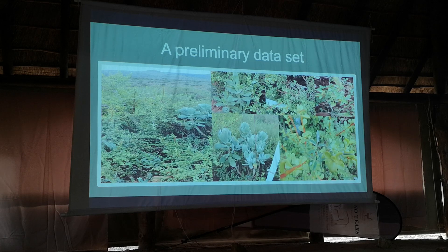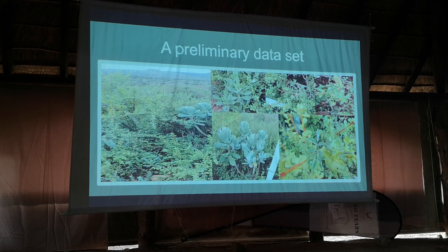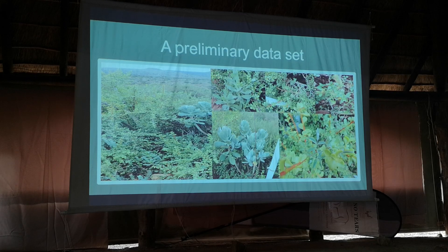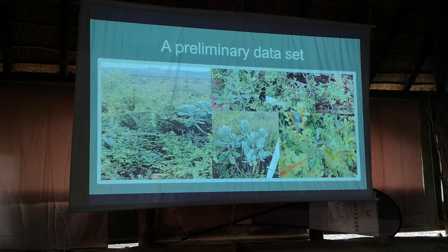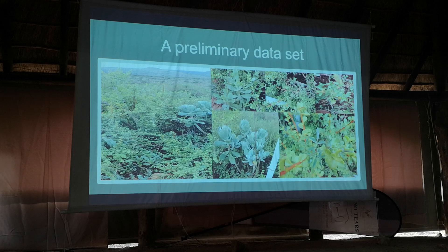At each spot I'd go in, place a pole in a bush clump, and document any plant that occurred within a half-meter by half-meter block from ground level all the way up to the canopy. I did about 30 of those in each of the degradation states.